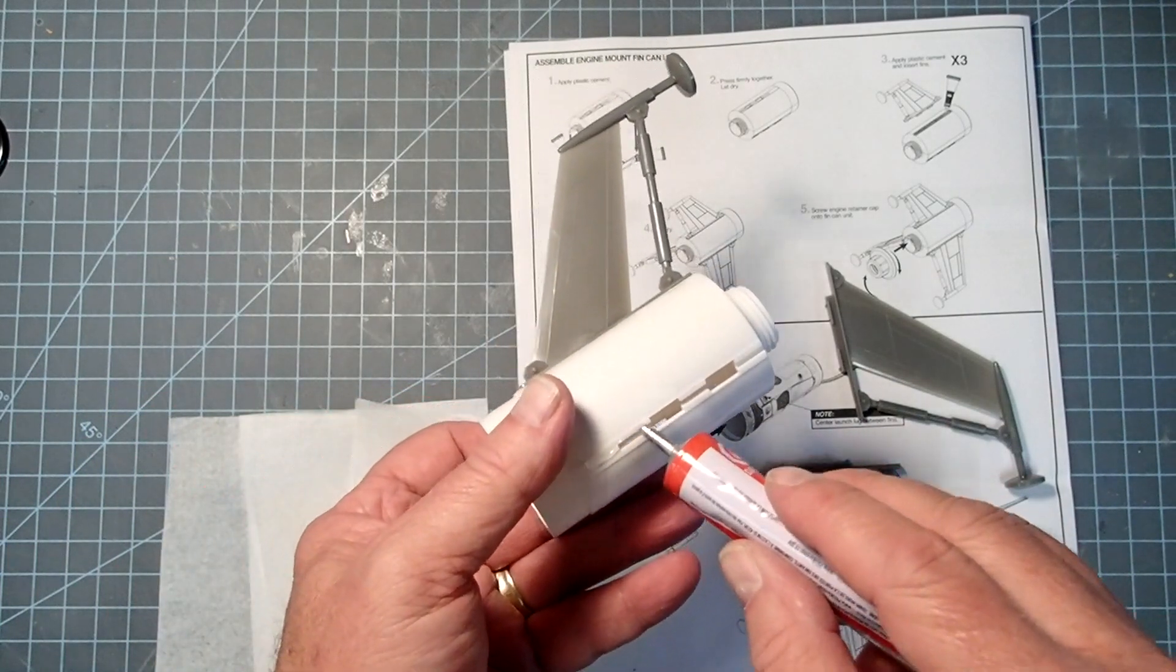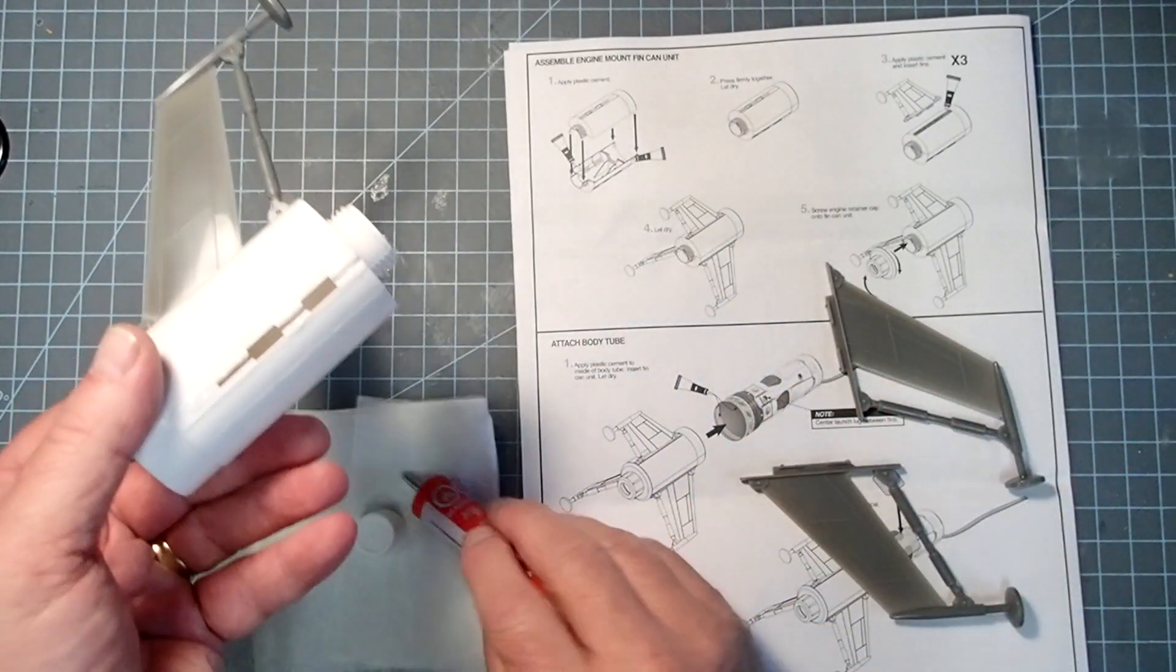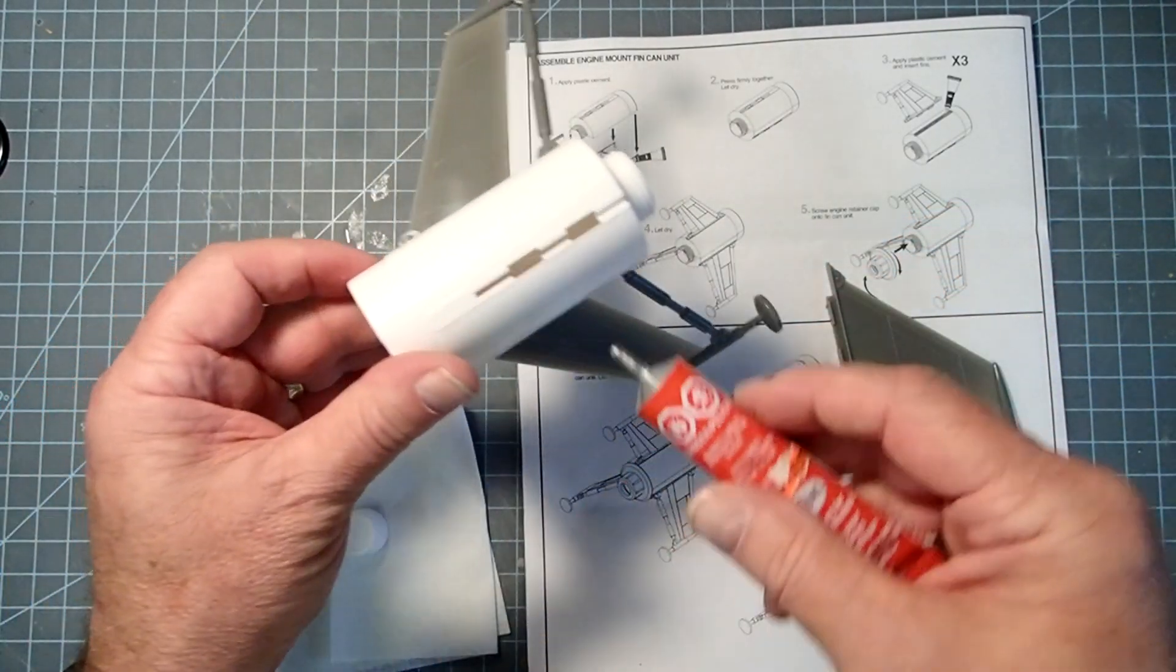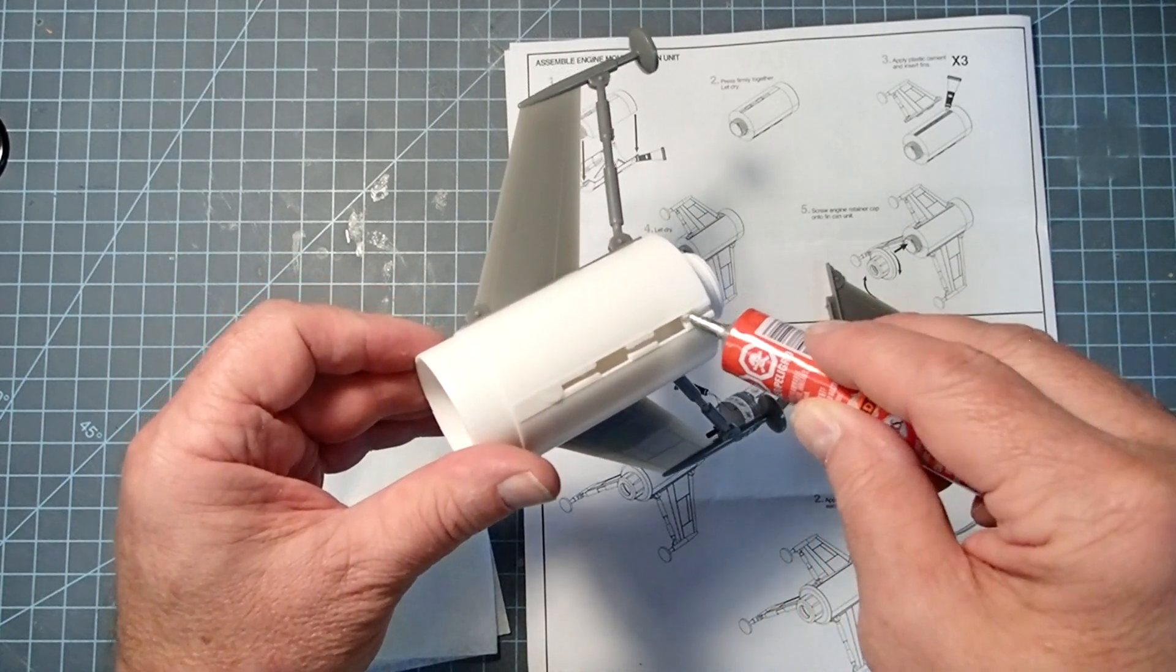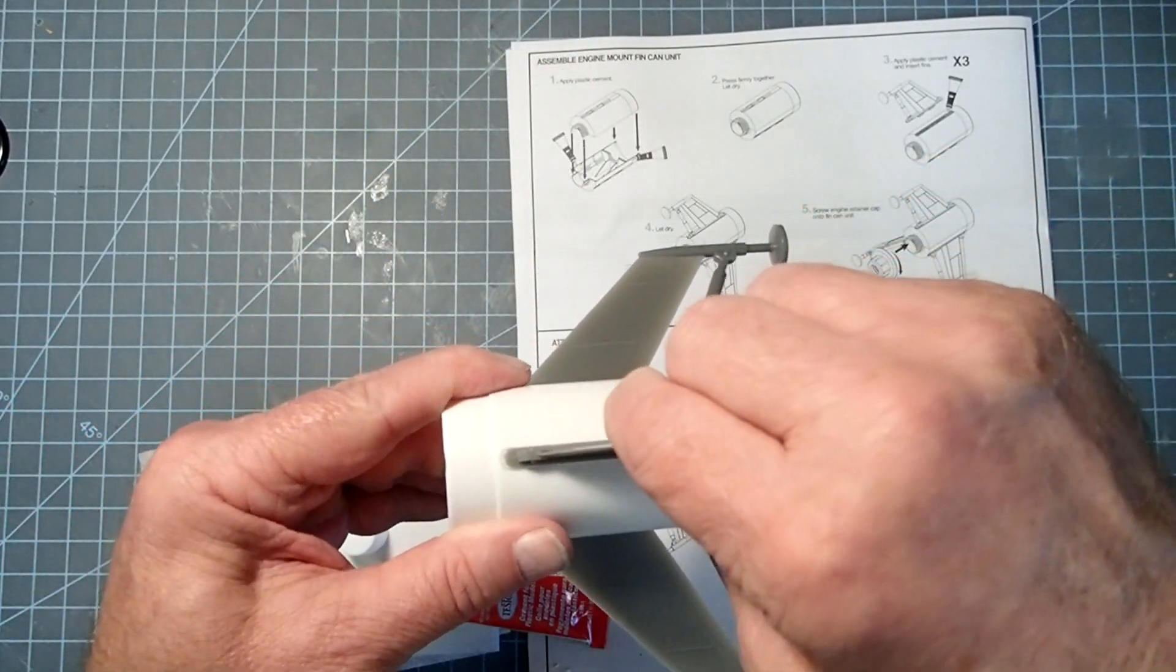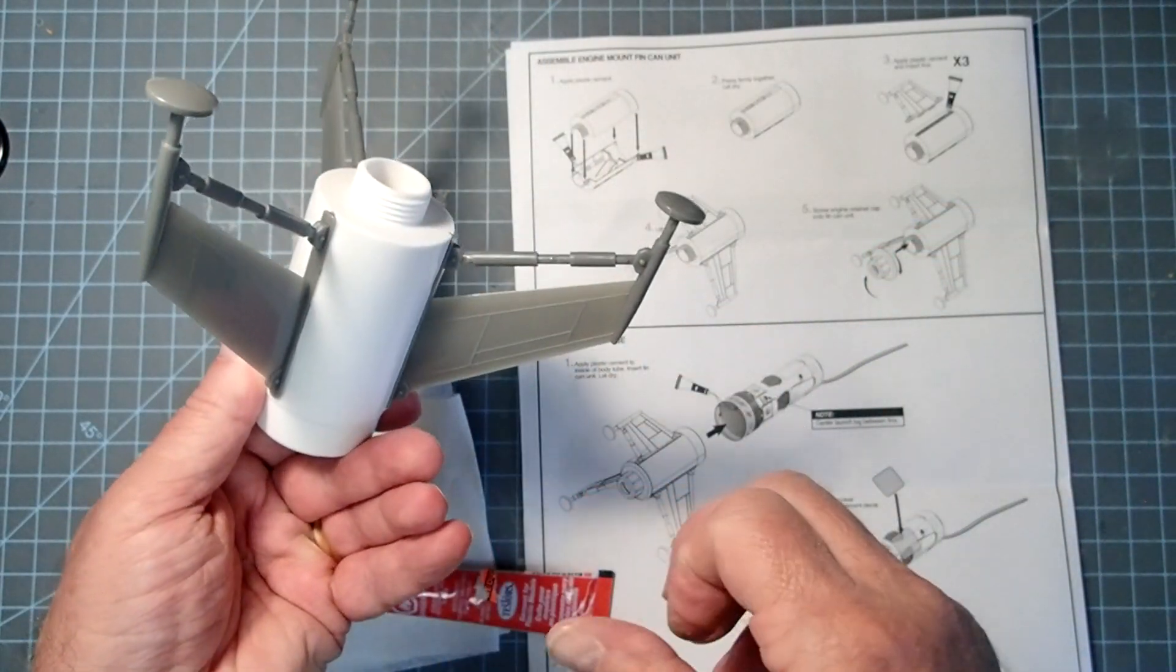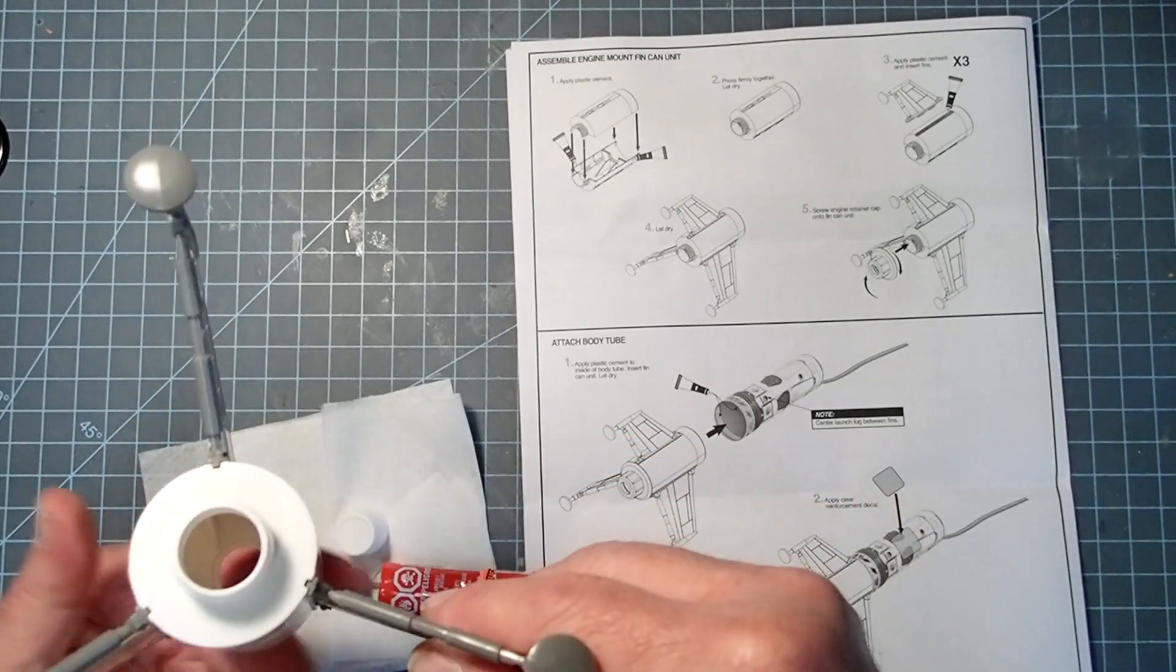So here we're going to try that again, just a small amount along there. Slide that one in. And then the same thing with that last one. There we go, just like that. Now all of these should be even with the edge there. And now I'm going to let this dry for a few minutes before we attach it to the body tube.